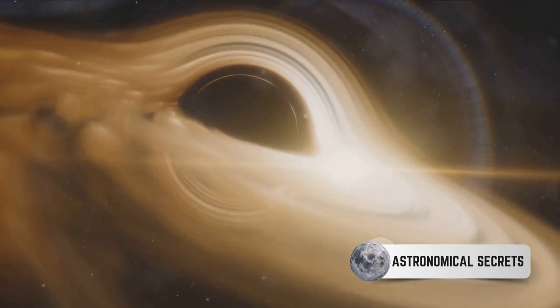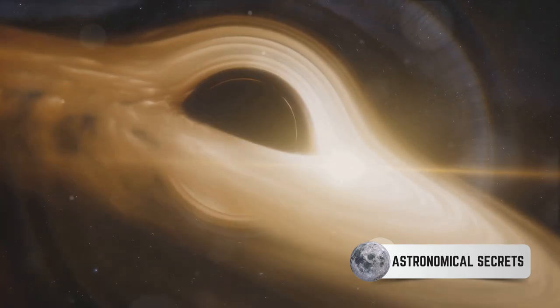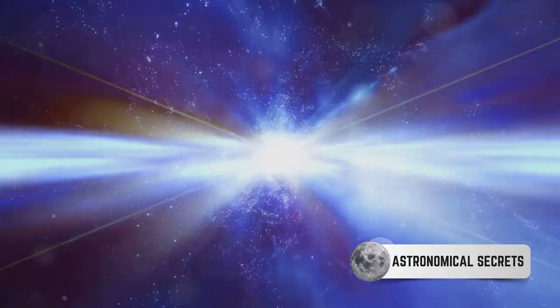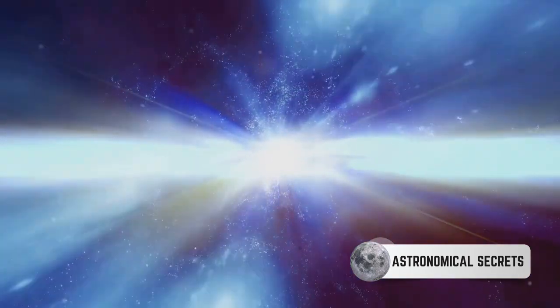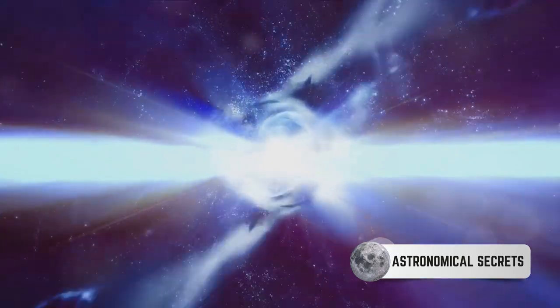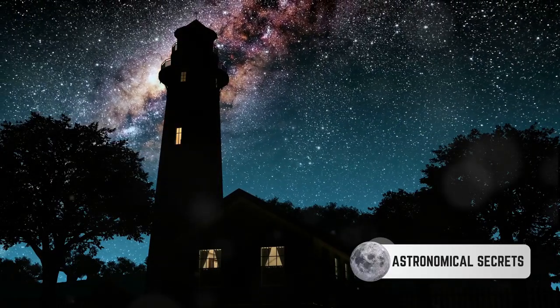When the gravitational pull of this white dwarf becomes too strong, it starts to steal matter from its companion star. Once the white dwarf accumulates enough matter and crosses a certain threshold, a spectacular explosion ensues, resulting in a Type 1a supernova.